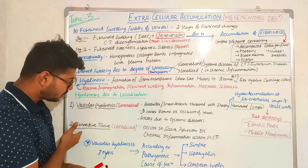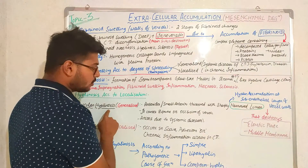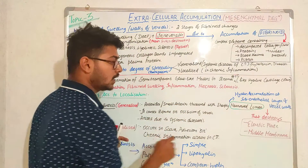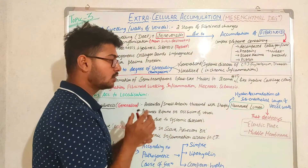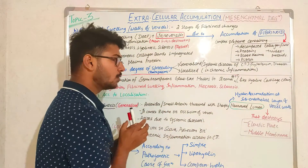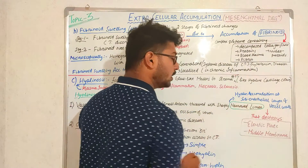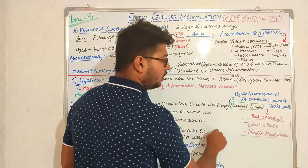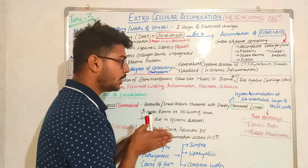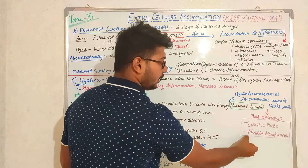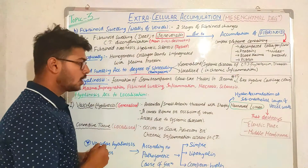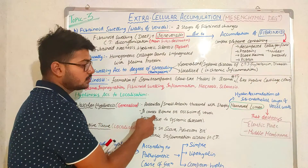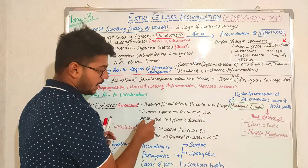According to localization, hyalinosis is divided into two types: vascular hyalinosis and connective tissue hyalinosis. In vascular hyalinosis, the arteries or small arteries are thickened but have a sharply narrowed lumen due to hyaline accumulation in the subendothelial layers of the vessels. This causes the elastic plate to lose elasticity, destroys the middle membrane, and causes rupture and occlusion of vessels.